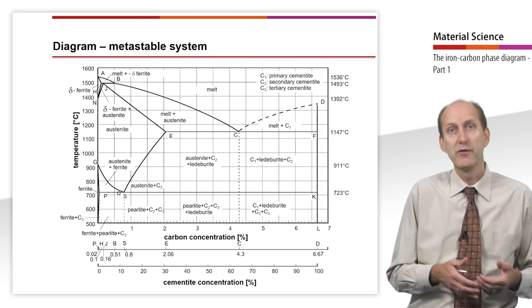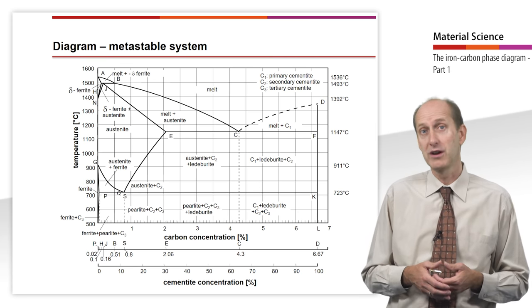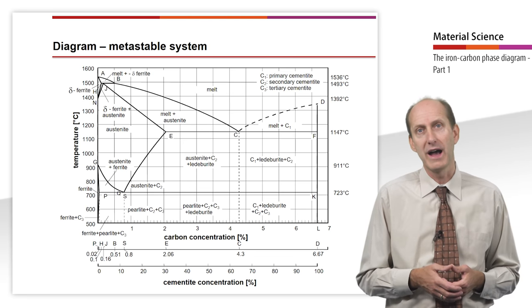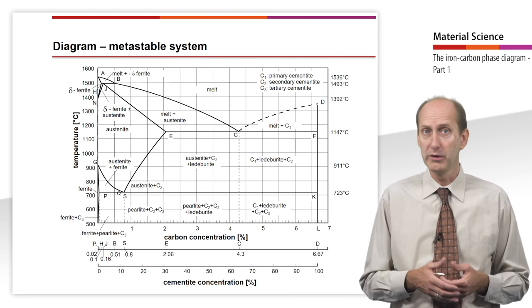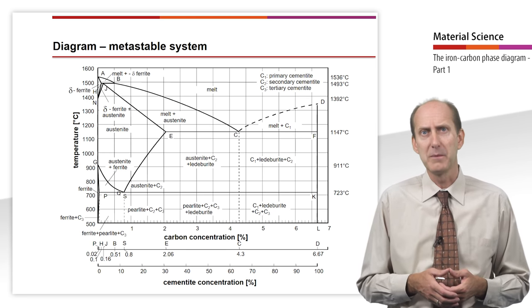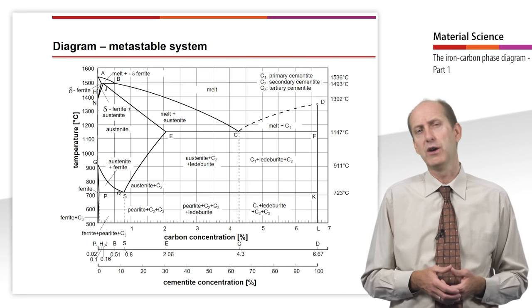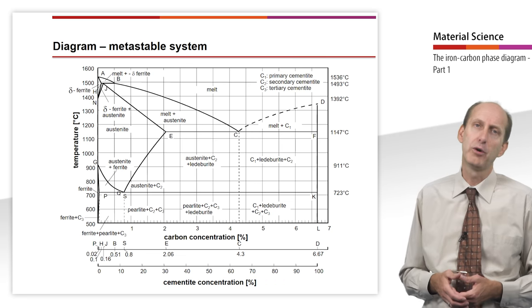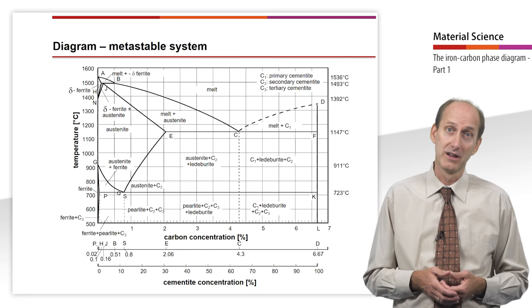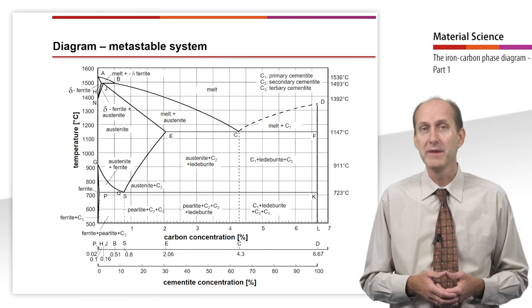As you can see, the phase diagram also indicates the proportion of cementite below the carbon scale. Cementite is an intermetallic compound of iron and carbon with the formula Fe3C, which is characterized by high strength and hardness, but also by a low degree of toughness. A carbon content of 6.67% corresponds to a cementite content of 100%. This explains why the iron-iron carbide phase diagram ends here.